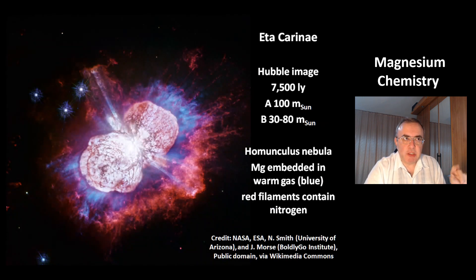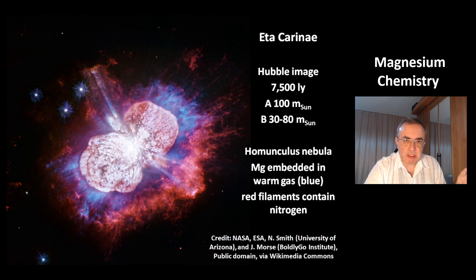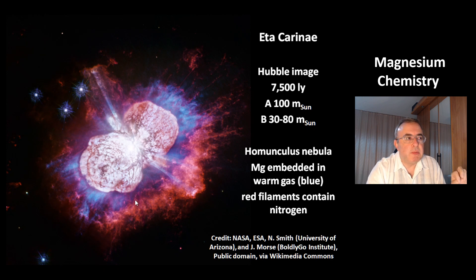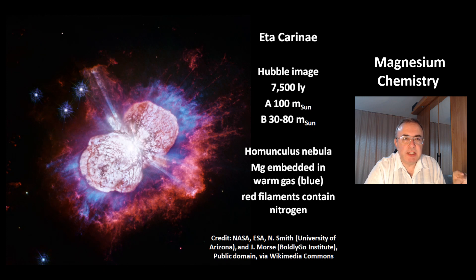This is a picture of the double star system Eta Carinae from the Hubble Space Telescope. This system is located at a distance of 7,500 light-years and contains two stars. Star A is 100 solar masses and Star B is 30–80 solar masses. This nebula is called the Homunculus nebula. It has a blue area which is a warm gas containing magnesium, and the outer red filaments contain nitrogen.